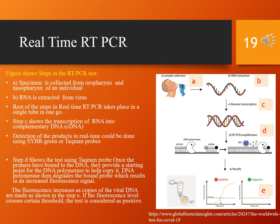DNA polymerase then degrades the bound probe, which results in an increased fluorescent signal. The fluorescence increases as copies of viral DNA are made. If the fluorescence level crosses a certain threshold, the test is considered positive.